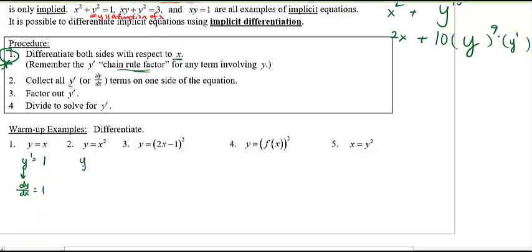How about number two? Y prime equals, that's right, 2x. And then number three, y prime equals, yeah, chain rule. Two times 2x minus 1 to the power of one, and then don't forget the derivative of the inside which is an extra factor of two. So the two times two is four. What we have here? Four times 2x minus 1. If you want to multiply it out even more, 8x minus 4.